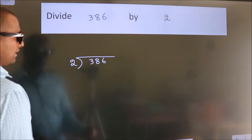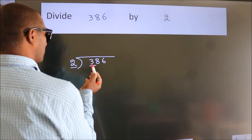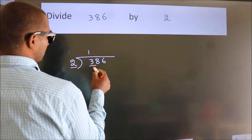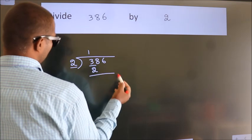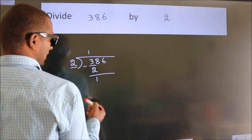Next. Here we have 3, here 2. A number close to 3 in 2 table is 2 1s, 2. Now we should subtract. We get 1.